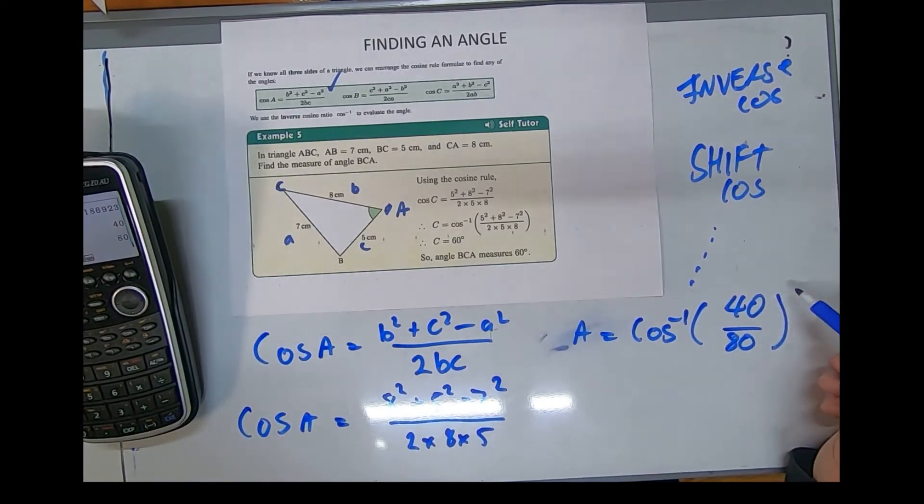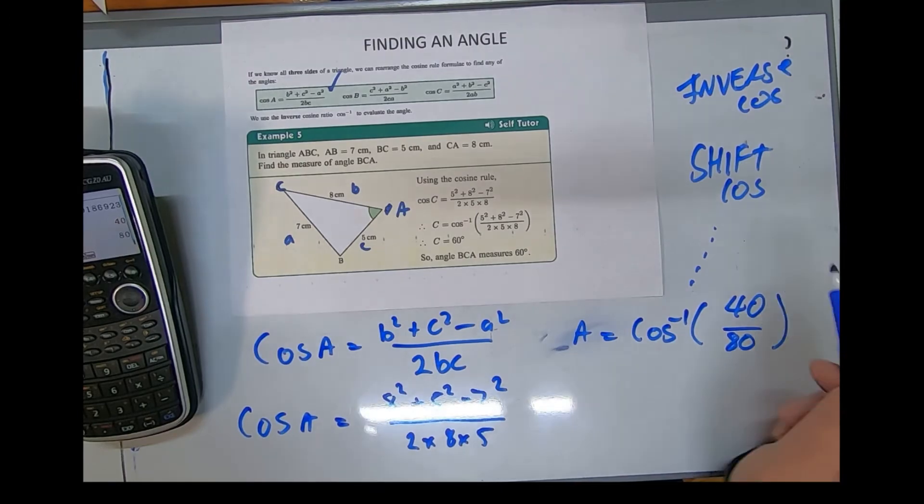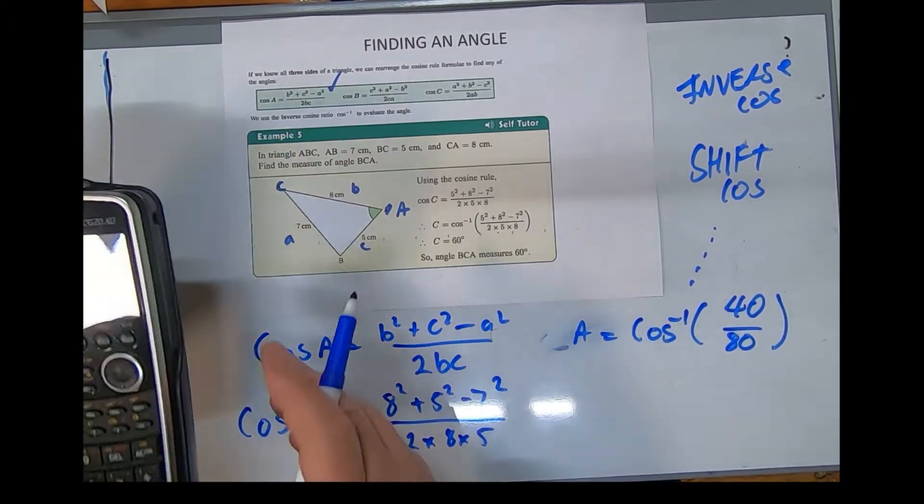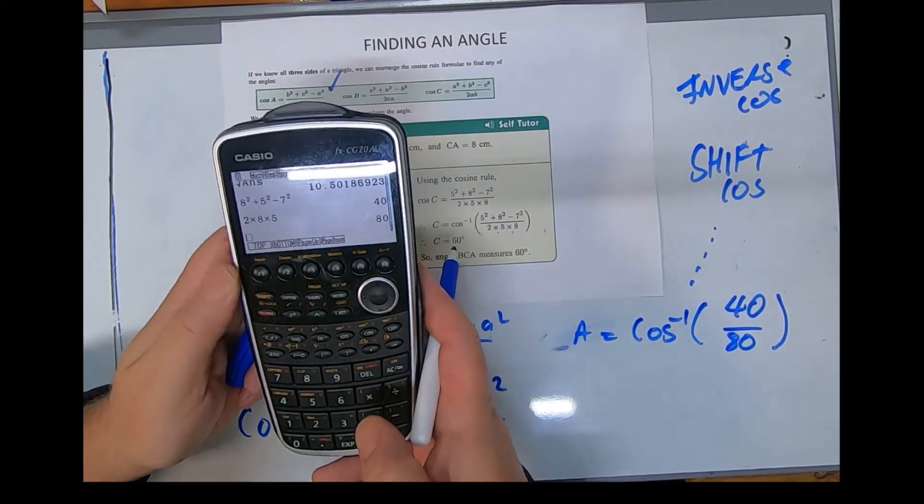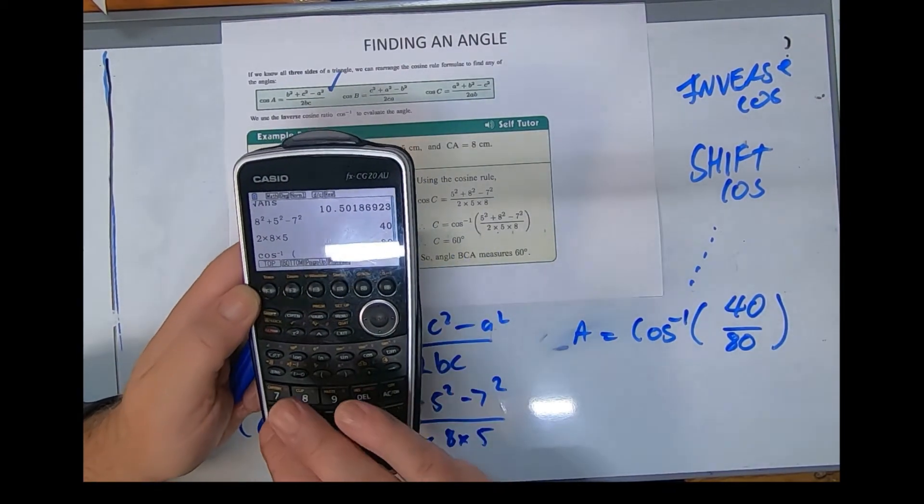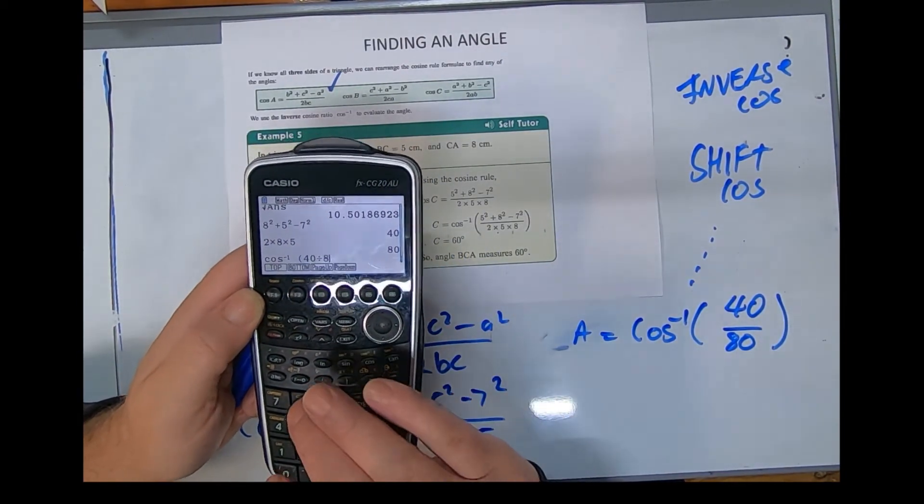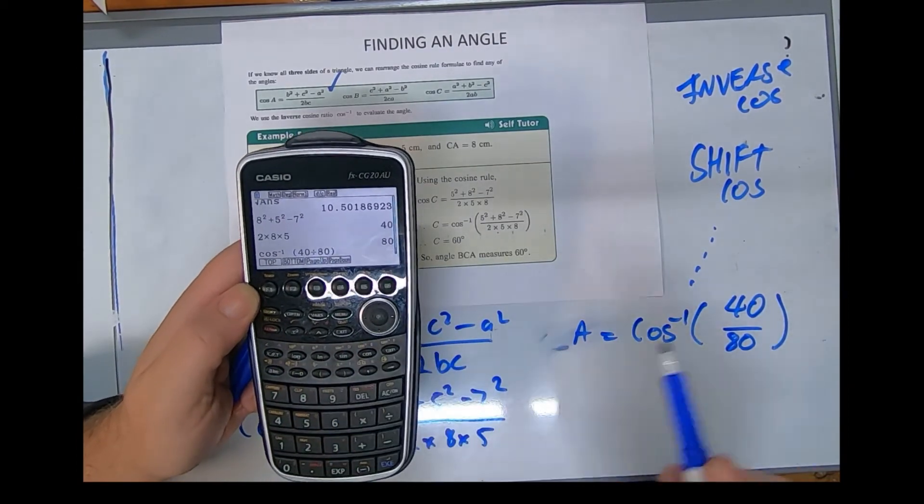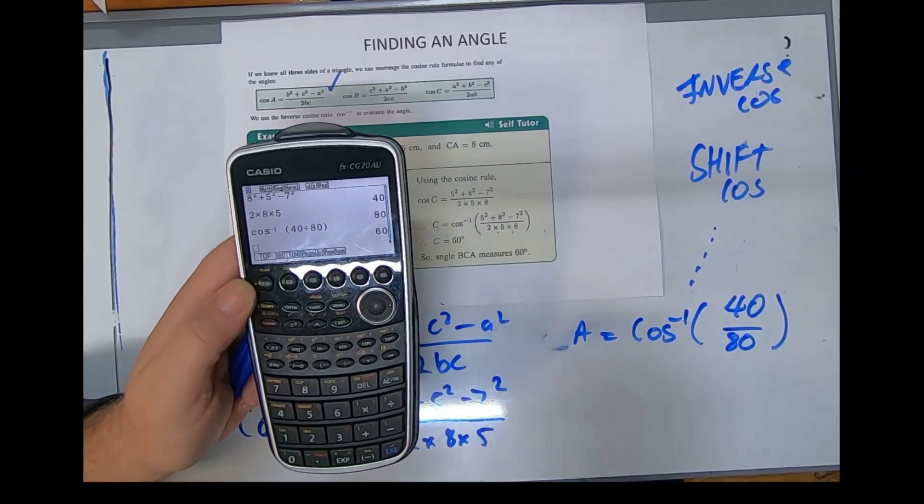I think we'll have far less problems typing what I've got here into the calculator. So this is how I would do it: shift cos, bracket, 40 divided by 80. I know some people like to use the fraction tool, but that's what this means—40 divided by 80.